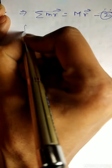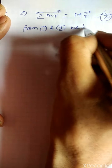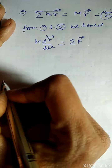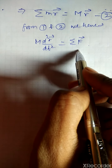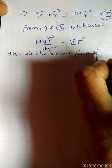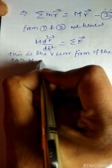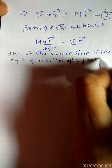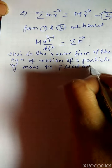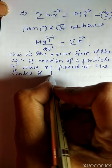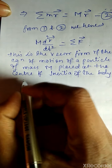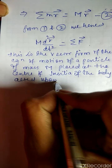From equations 1 and 2, we have M d²R/dt² = ΣF. This is the vector form of the equation of motion of a particle of mass M placed at the center of inertia of the body, acted upon by the external forces.